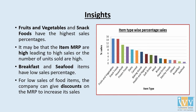Coming to a few business observations and insights, fruits and vegetables and snack foods have the highest sales percentage, whereas breakfast and seafood have low sales percentage. For low sales, the company can give discounts or attractive offers to increase its sales.